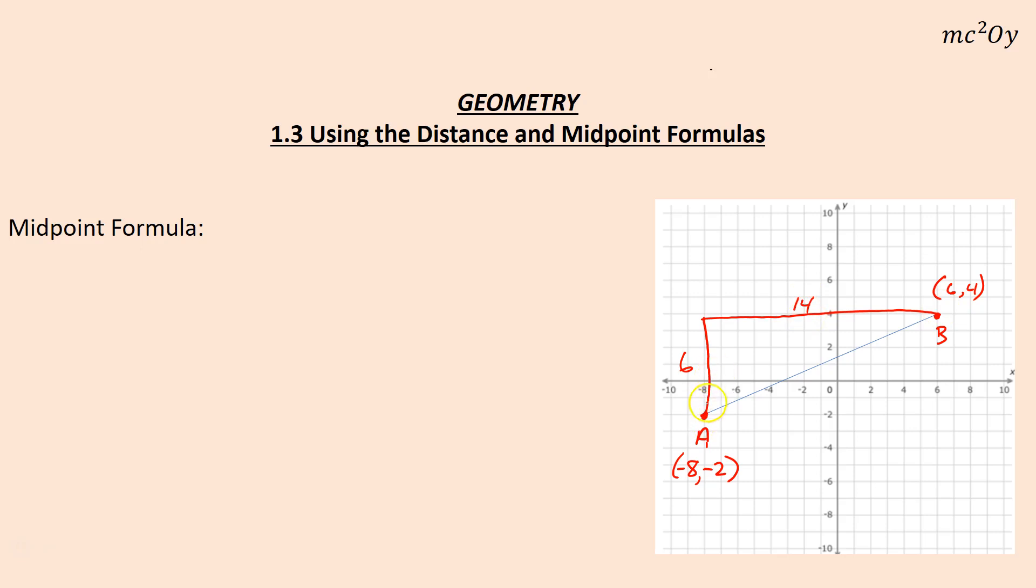half of this. One, two, three. And then over half of fourteen. Oops. Half of fourteen, which is seven. That would actually bring me to the midpoint. So I'll go up three and over seven. And so my midpoint is the ordered pair negative one, one.